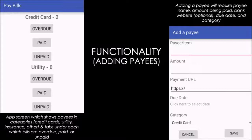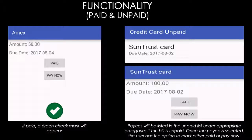The right figure shows the screen when adding payees. The name of the payee is required, along with the due date and the category. Amount due and payment URL are optional. If the user clicks the paid button, a green check mark will appear on the bottom of the screen, as shown in the left figure.